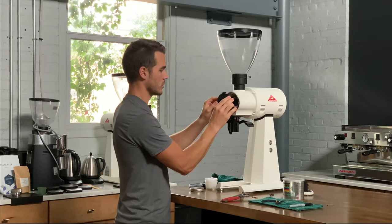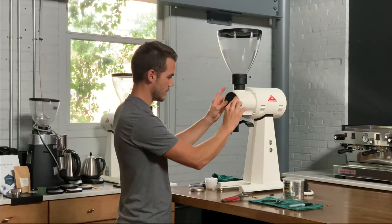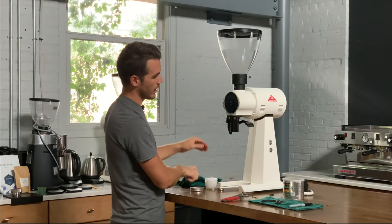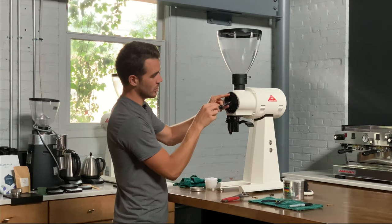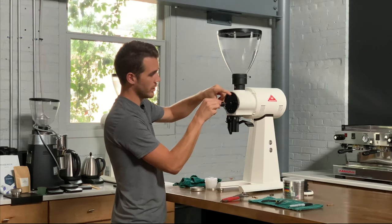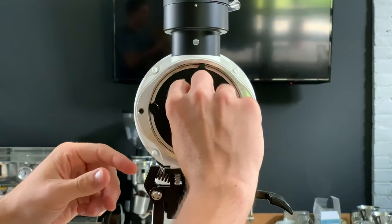And you're going to need to make sure that the slot in the shaft lines up with the two slots on the burr carrier so that you can insert your shear plate.